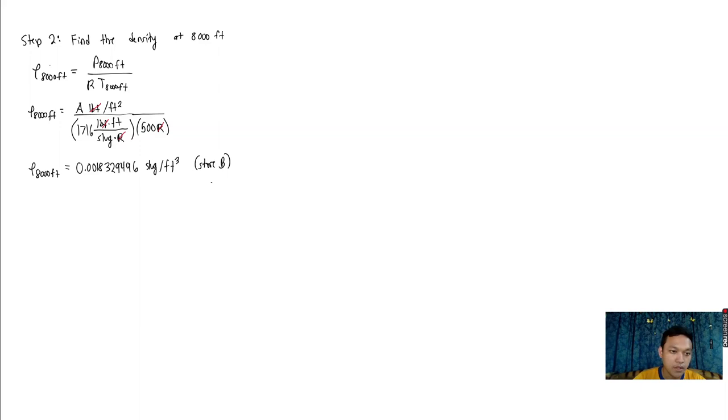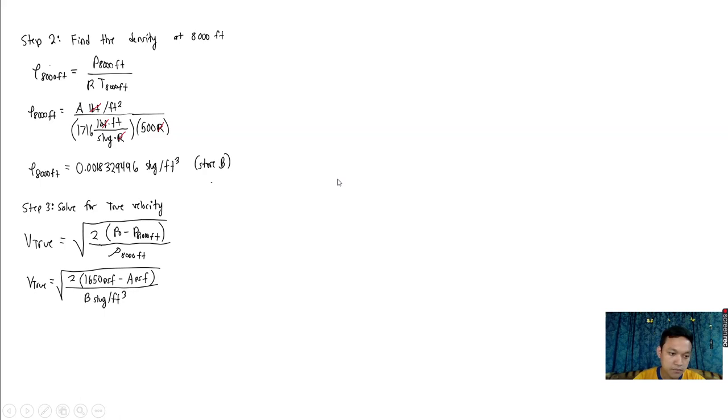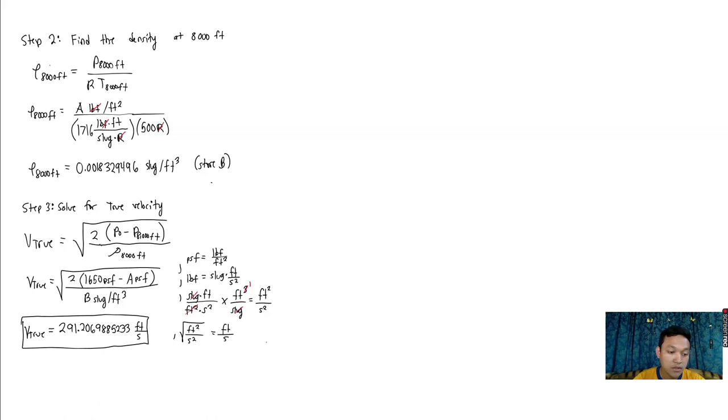Now that we have the pressure and density at 8,000 feet, we can solve for the true velocity. From the true velocity formula, inputting the values we have and solving for the unit in feet per second, we get true velocity through the calculator is 291.2069885233 feet per second.